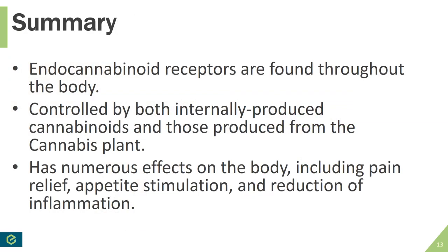In summary, endocannabinoid receptors and the endocannabinoid system are found throughout the body. They are controlled by both internally produced endogenous cannabinoids and those produced by the cannabis plant — exogenous cannabinoids. They have numerous effects including pain relief, appetite stimulation, and reduction of inflammation, and there are numerous other applications that have been researched, as well as applications that may not yet be discovered. This is a very exciting field of research with potentially many positive benefits to come. That is the end of this presentation — thank you for listening.